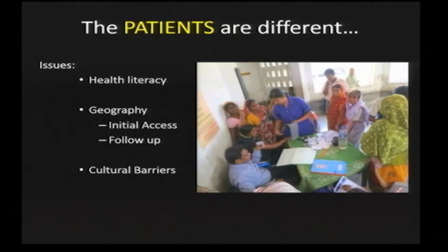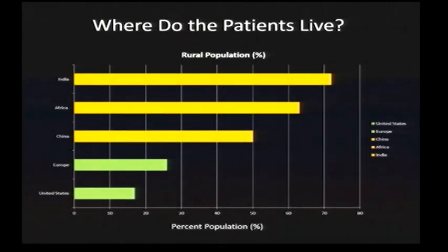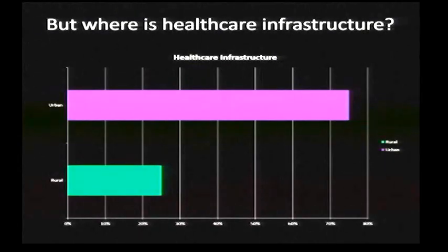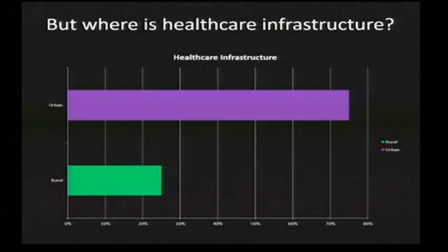The patients are also very different. Health literacy plays a significant role. Geography plays a role because of initial access and follow-up care, and cultural barriers can prevent patients from coming in, undergoing certain procedures, or even agreeing to a biopsy. In the United States and Europe, less than 30% of the population lives in a rural area. Whereas in India, Africa, and China, over 50% of India's population — 72% — lives in a rural setting. Healthcare infrastructure is the absolute inverse: less than 25% of healthcare infrastructure worldwide is in rural settings, and over 75% is in urban areas.